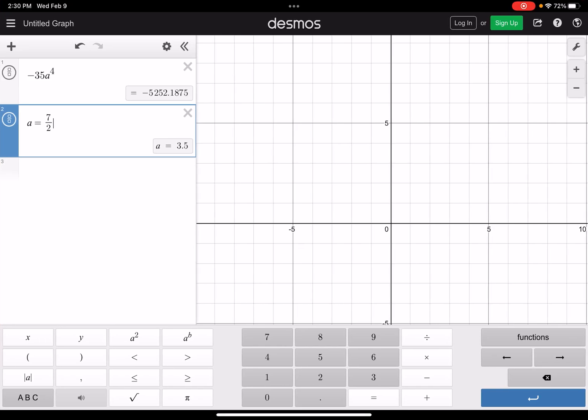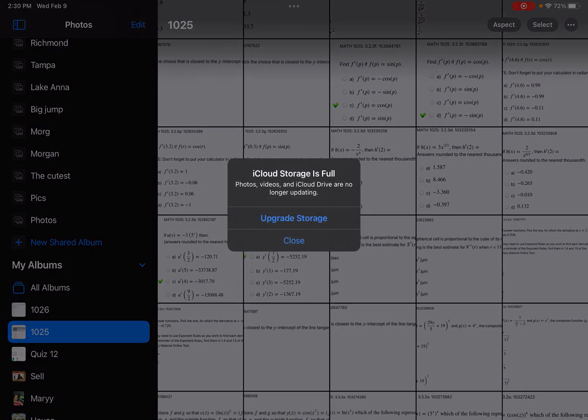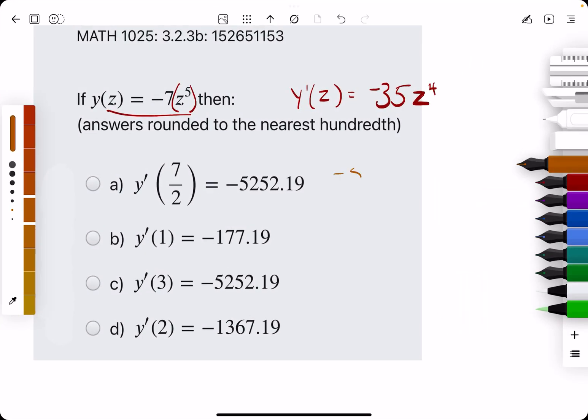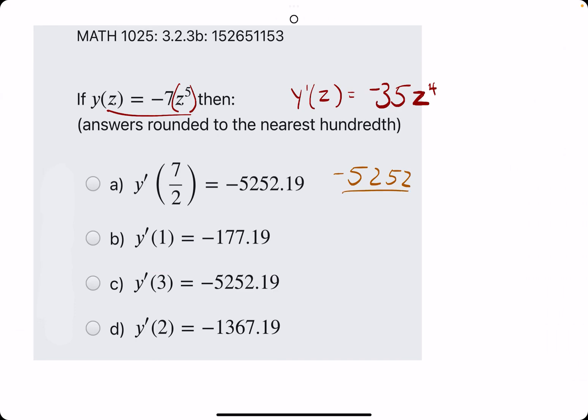So we get negative 5252, and I will just trust that this is most likely our answer because that matches so closely.